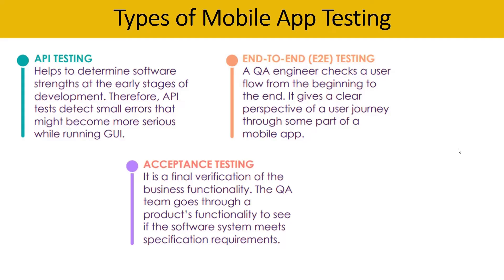Then we need to perform end-to-end testing. A QA engineer checks the user flow from beginning to end, giving a clear picture of a user's journey through the mobile application. We need to make sure there are no crashes when performing transactions — money transactions or any kind of workflow we are verifying and validating.